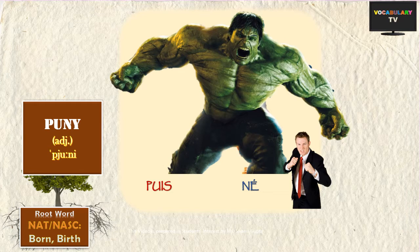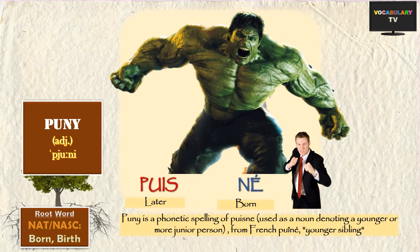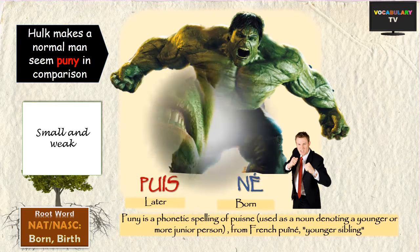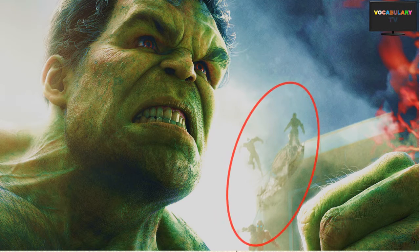One common word that few people know is derived from this root is 'puny.' The word puny is the phonetic spelling of the French 'puisne' and has been adapted into English as such. Originally, puny referred to someone who was born later and hence a younger sibling. But nowadays, puny means small and weak — like if you compare Hulk to a normal man, the normal man looks puny in comparison. In this action scene from a Hulk movie, the people jumping out are quite puny.